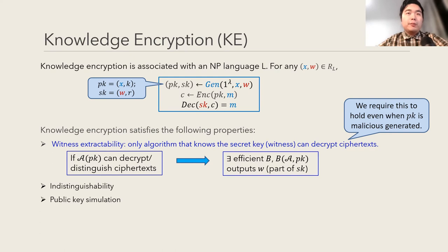Motivated by this question, we put forward the notion of knowledge encryption. Like CDS, knowledge encryption is associated with an NP language. The ciphertext is generated from an instance and its witness. Knowledge encryption should satisfy the witness extractability property, which claims that if an efficient adversary can distinguish ciphertext, then there is an efficient algorithm extracting the witness, which is also part of the secret key, from the adversary. This should hold even for maliciously generated public keys. Besides this, we also require knowledge encryption to satisfy indistinguishability and public key simulation properties.